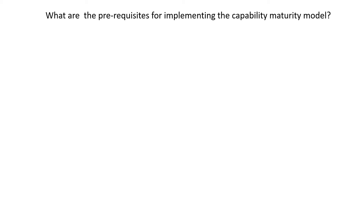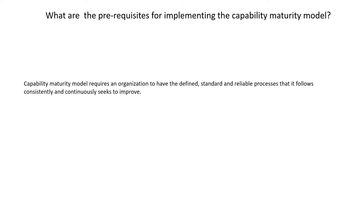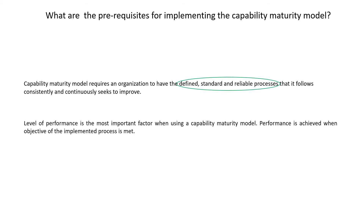What are the prerequisites for implementing the Capability Maturity Model? It requires an organization to have a defined, standard, and reliable process that should be followed consistently and continuously to seek improvement. The most important aspect is level of performance — it is the most important factor when using a Capability Maturity Model. Performance is said to be achieved when the objective of the implemented process is met.